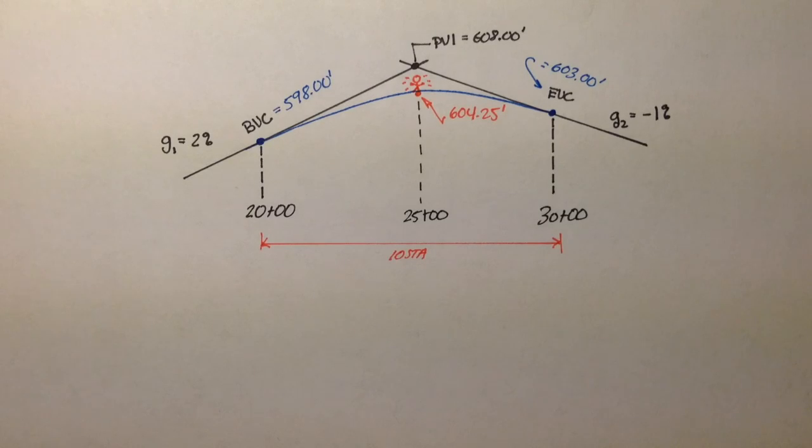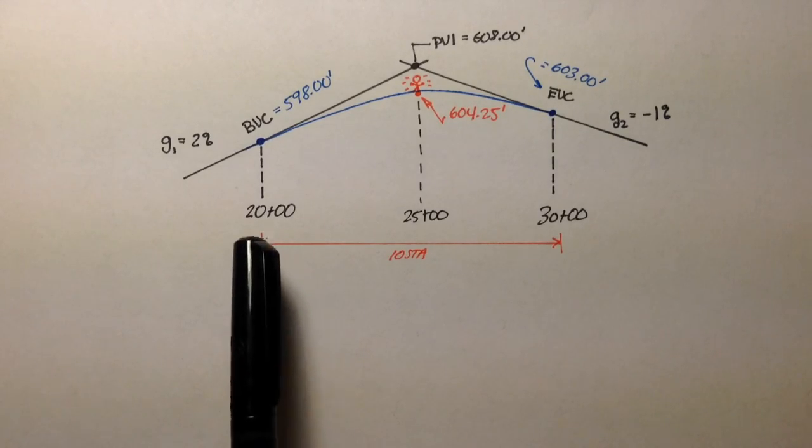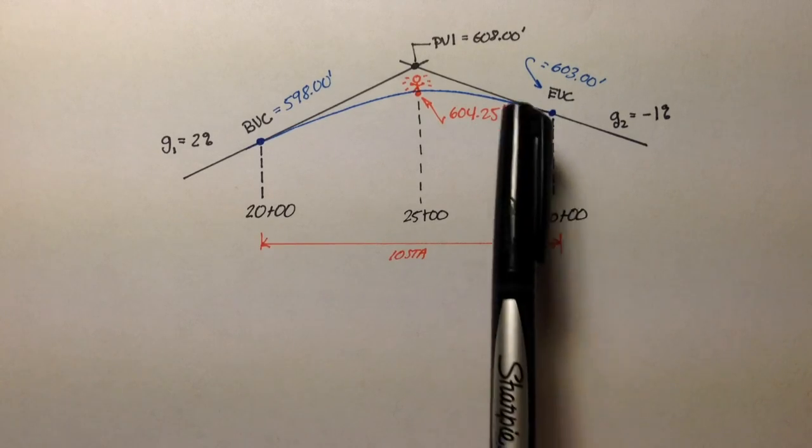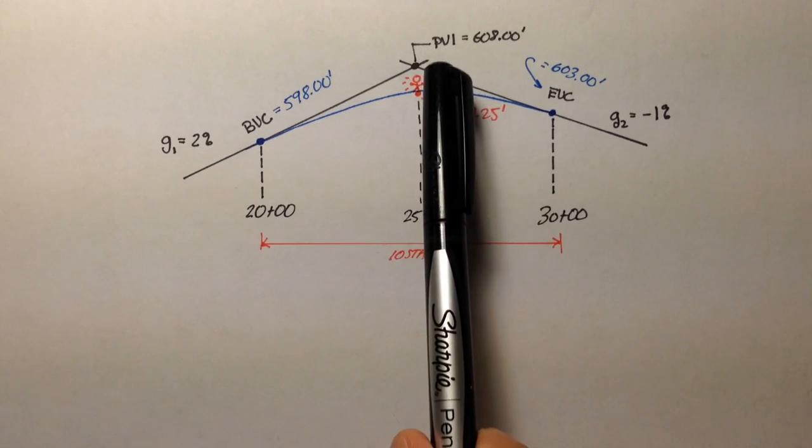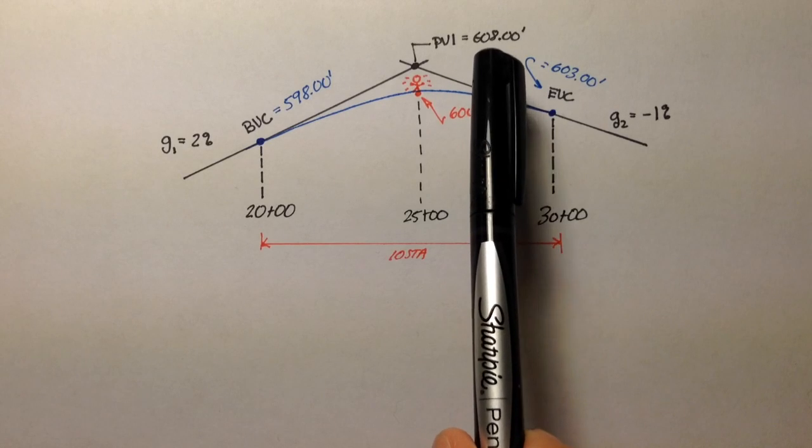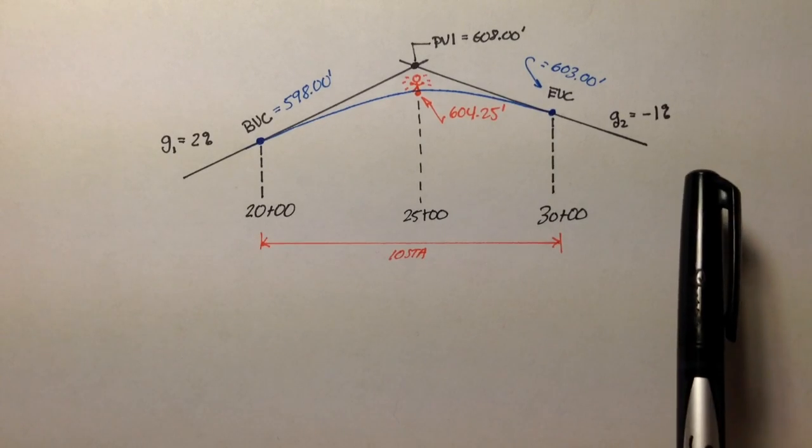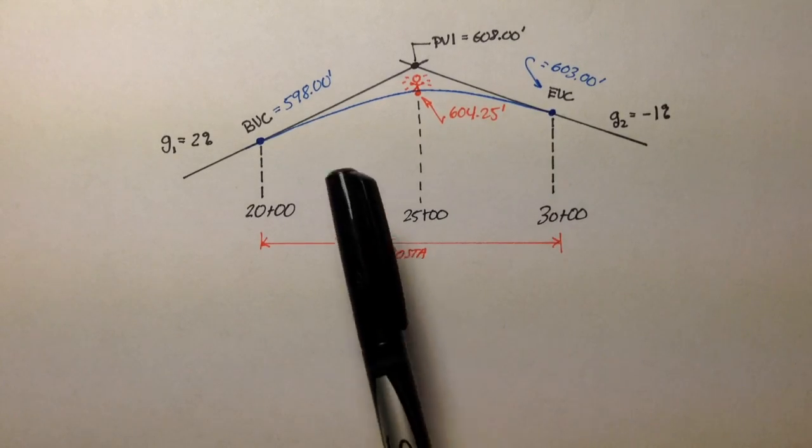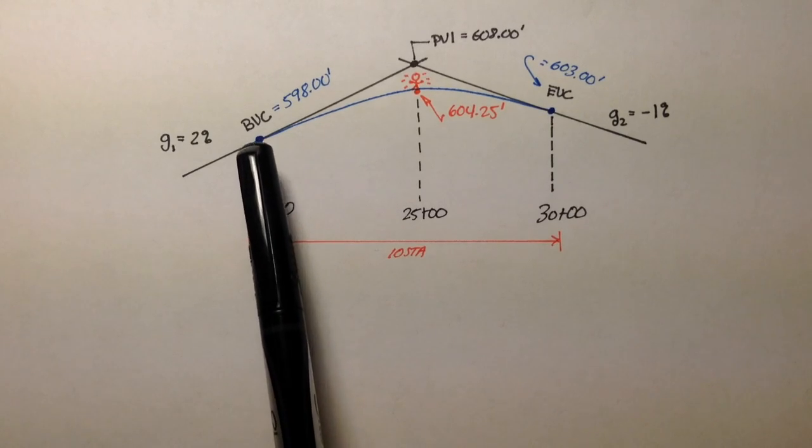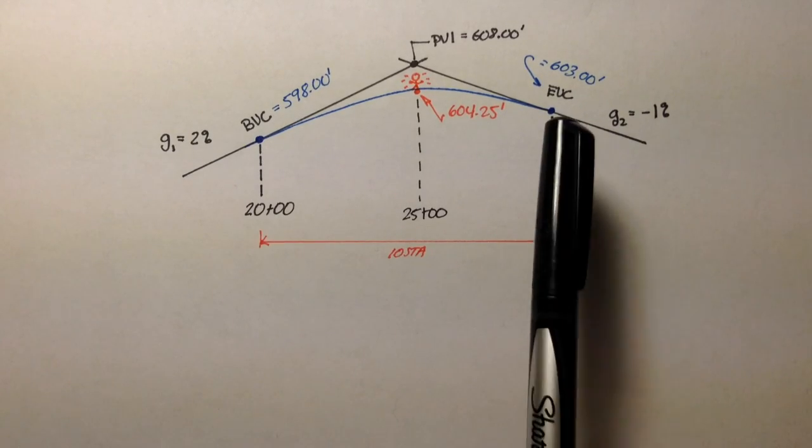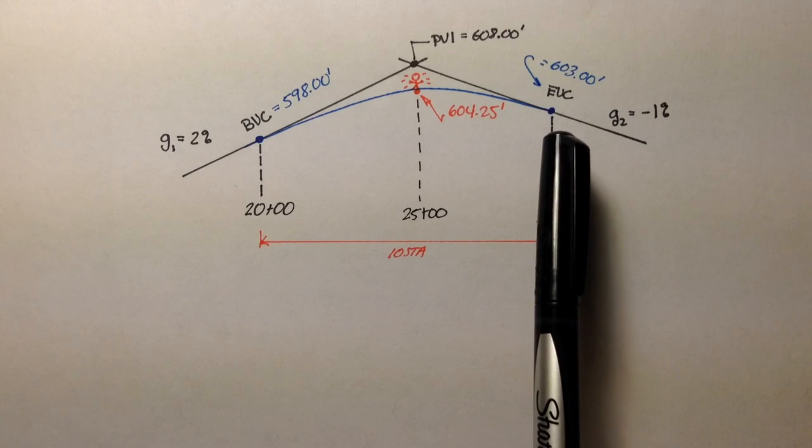Welcome back. In the last video, we were looking at this vertical curve example, and we were using our givens, which were the stations 20 and 30, the elevation of point of vertical intersection which is 608, our grades, and we used that information to figure out what the elevation of the beginning of vertical curvature was and the end of vertical curvature.